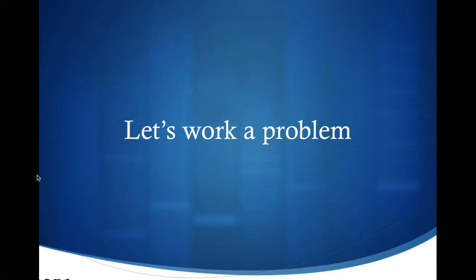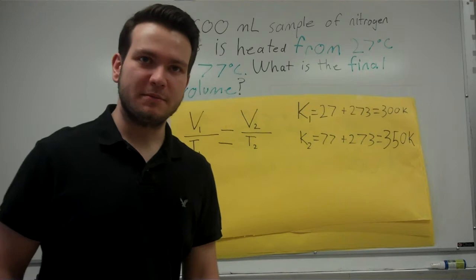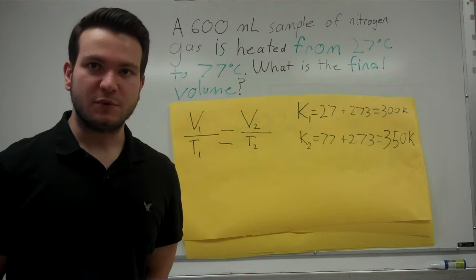So, now that we know about Charles' Law and how to work with it, let's work a problem. Okay, let's take a look at this problem. It says a 600 milliliter sample of nitrogen is heated from 27 degrees Celsius to 77 degrees Celsius. What is the final volume?